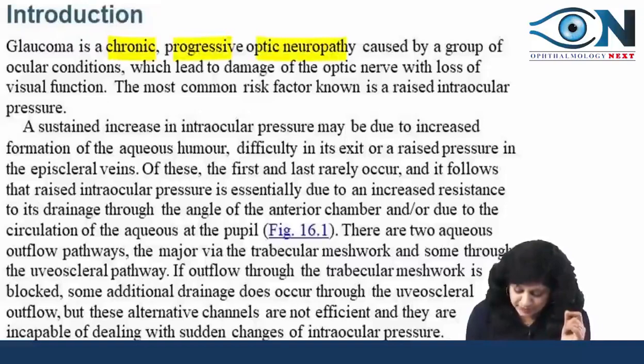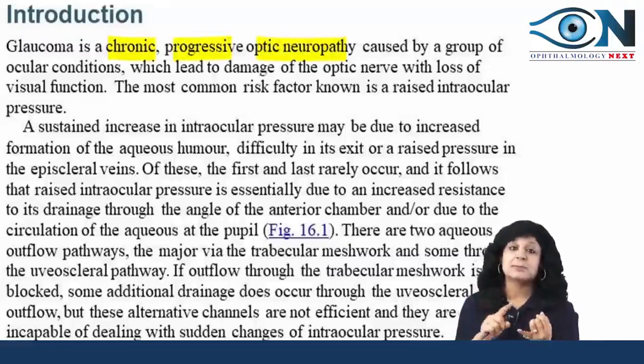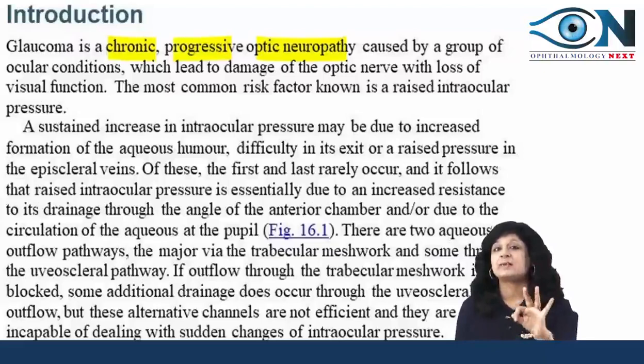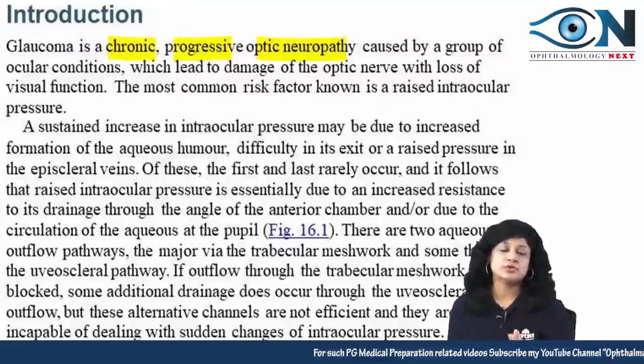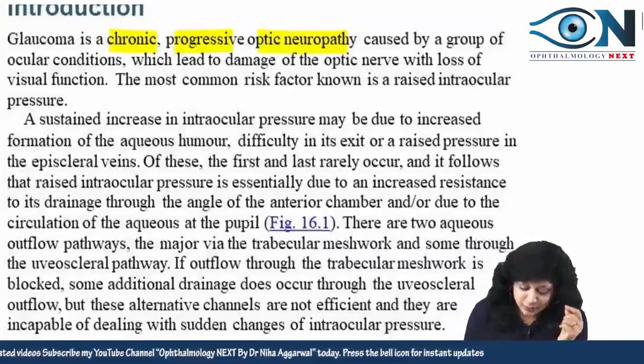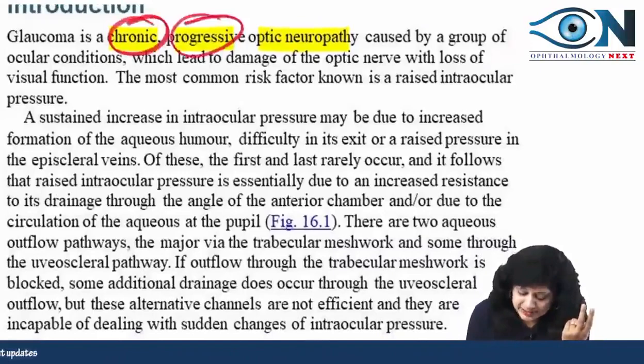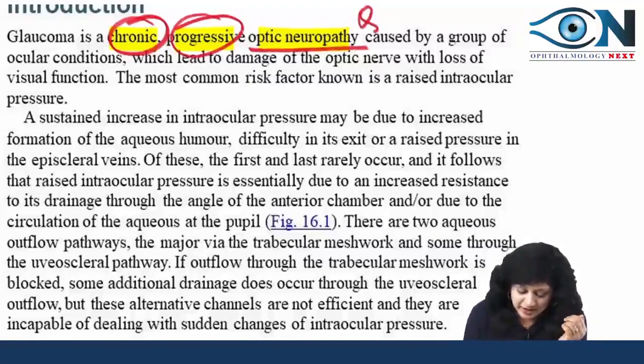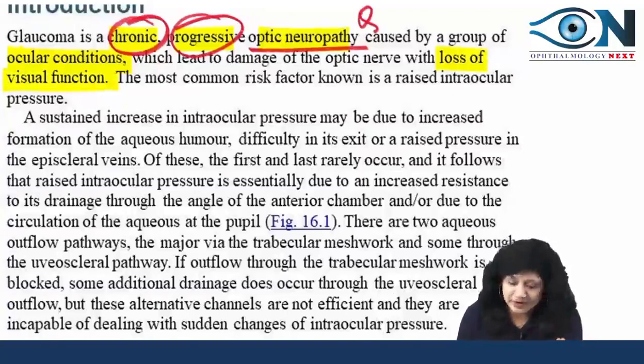Glaucoma is a chronic progressive optic neuropathy. It is multifactorial and is characterized by retinal ganglionic cell death by apoptosis. There are so many things actually occurring in glaucoma. One of the most important is that this is a chronic, progressive optic neuropathy occurring due to a group of ocular conditions — that is why we say it is multifactorial — and it leads to the loss of visual function with visual field effects.